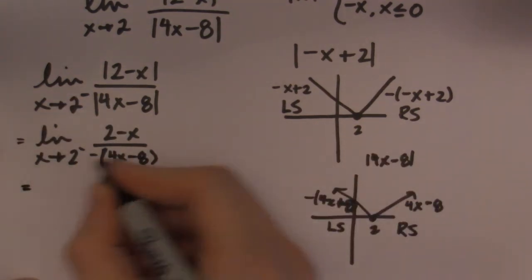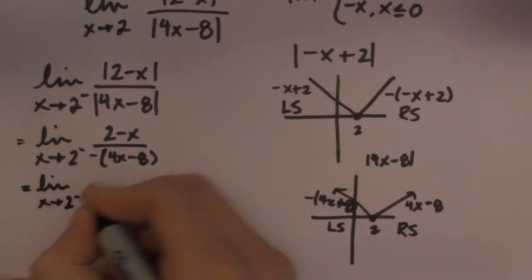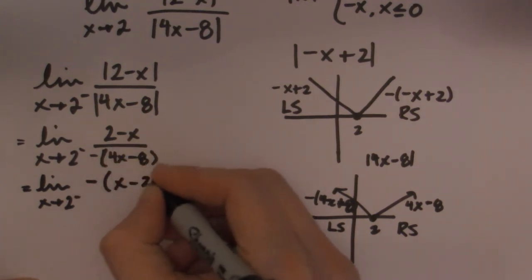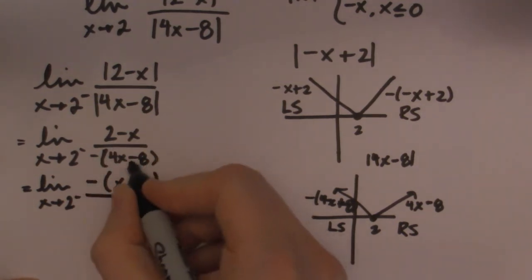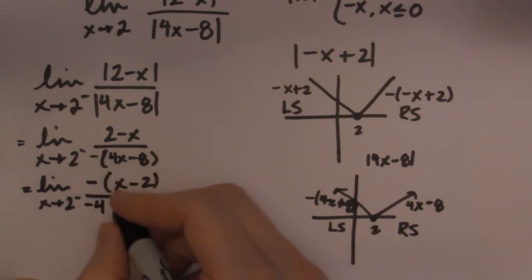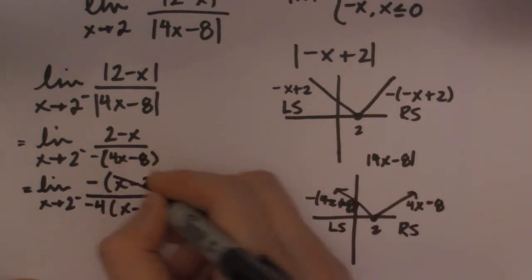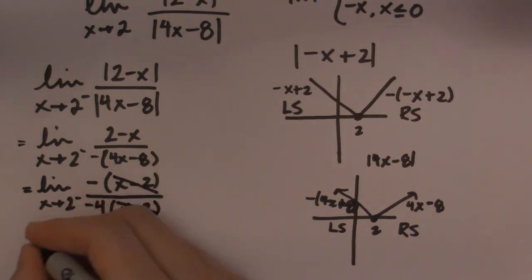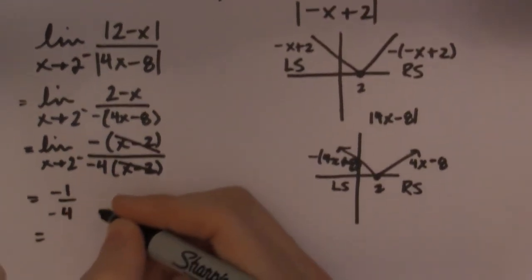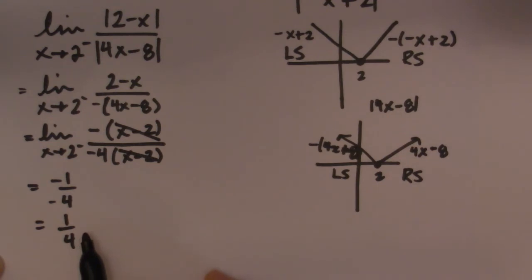So now we just need to solve this limit. I'm going to factor a negative out of 2 minus x, leaving x minus 2. Then I'll factor a 4 out of the bracket 4x minus 8, which gives negative 4 times x minus 2. Cancel those x minus 2 terms, and on top I'm left with negative 1 over negative 4, which is 1 over 4. So that is my left-side limit.